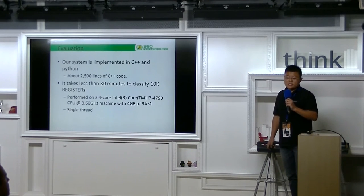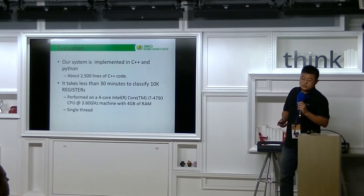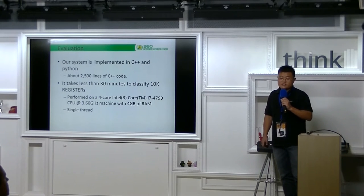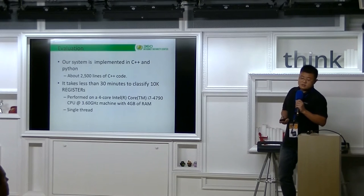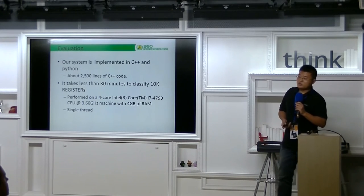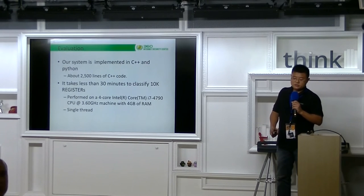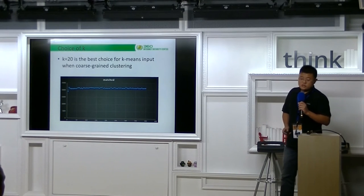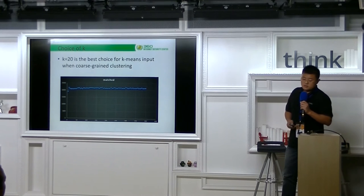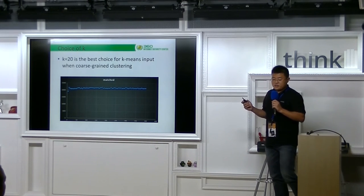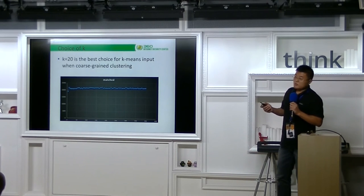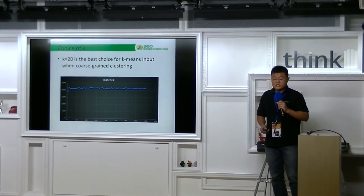We have implemented our idea in C++ and Python. Our solution contains about 2,500 lines of C++ code. Our test shows that it takes less than 30 minutes to classify 10,000 registers. This test is done on a machine with this configuration, and only a single thread program is used. We also did many tests to find the best choice of k-value for k-means. As shown in the figure, the x-axis stands for k-value and the y-axis stands for the successfully classified number. Our test shows that 20 is the best choice for k-means.